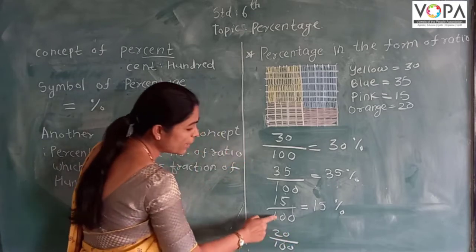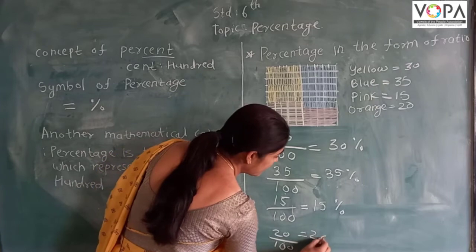Out of 100, 20 are orange color, so we can write it as 20 percent.